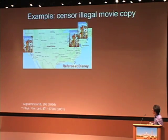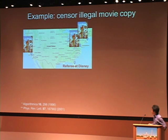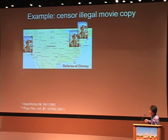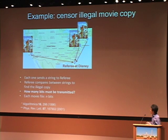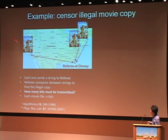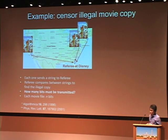So why is this important? Suppose the referee at Disney finds three copies of the movie Zootopia, located in three different locations: L.A., D.C., and Boston. The referee knows two of them are legal and one is illegal, but does not know which. The referee can ask each location to send some information about their movie file. The referee then compares these three strings and can find which is illegal, because the illegal copy will be different from the other two legal copies.